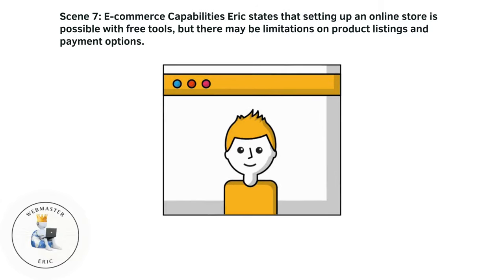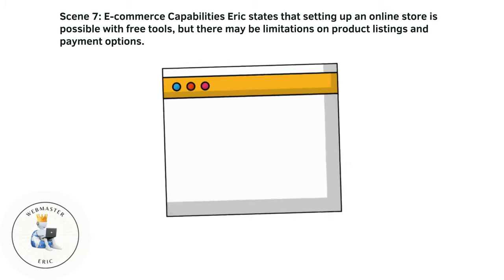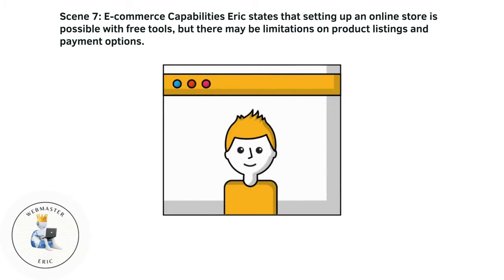Scene seven: e-commerce capabilities. Eric states that setting up an online store is possible with free tools, but there may be limitations on product listings and payment options.